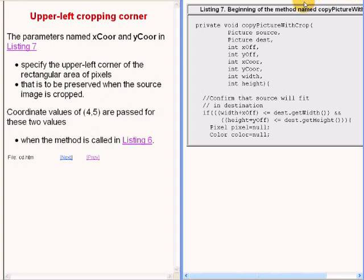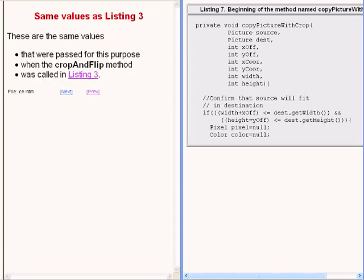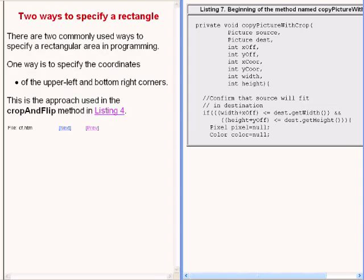The parameters named xcoor and ycoor specify the upper left corner of the rectangular area of pixels that is to be preserved when the source image is cropped. If we were to go back and look at the calling code, we would see that coordinate values of 4 and 5 were passed for these two values. These are the same values that were passed for essentially the same purpose when the method named crop and flip was called earlier.